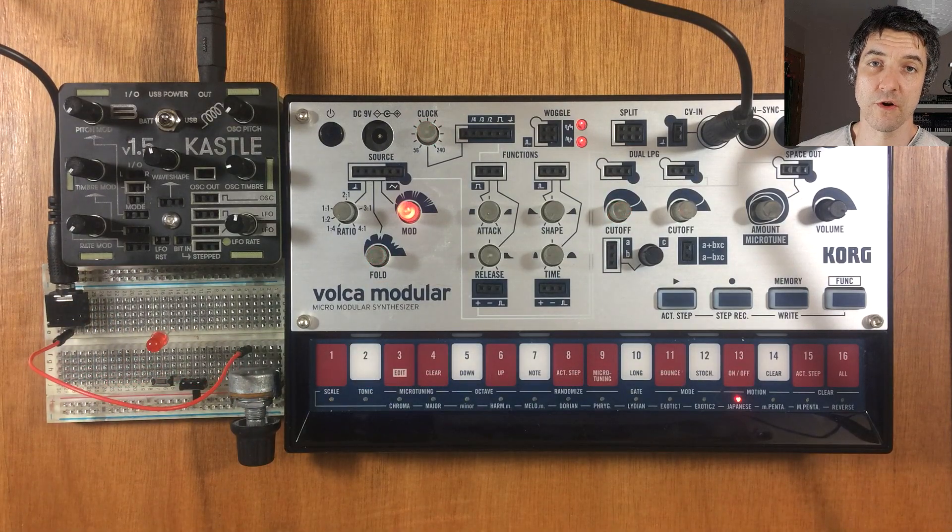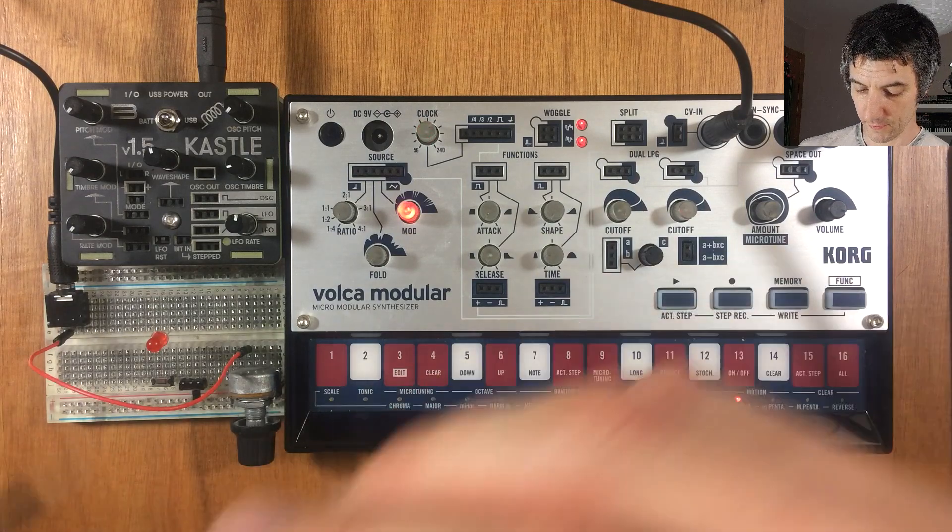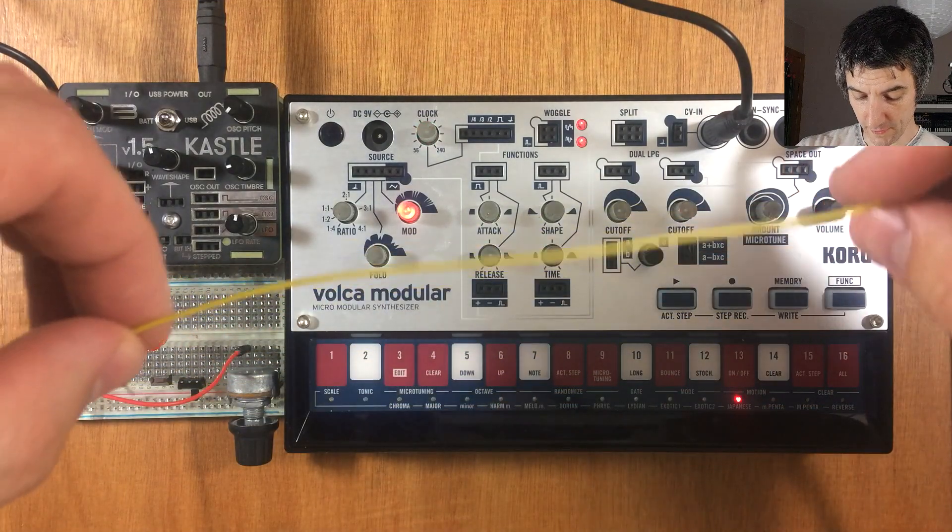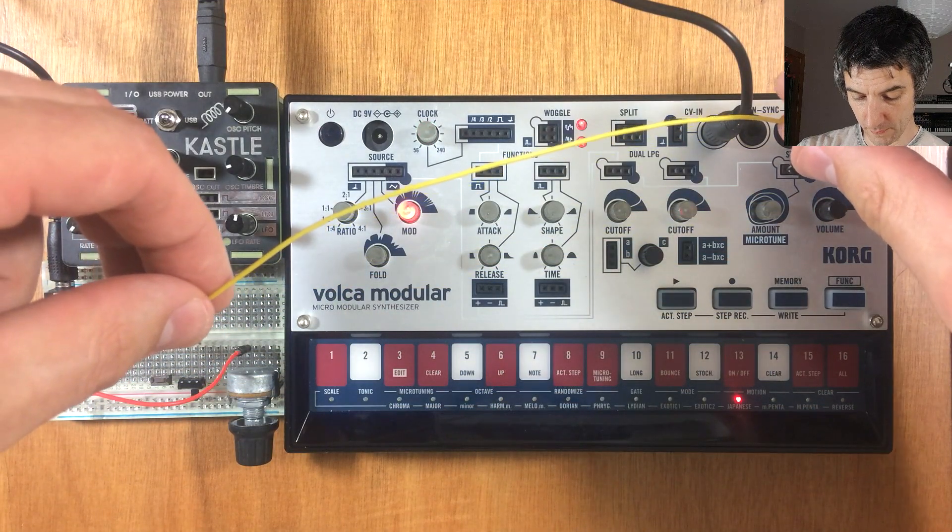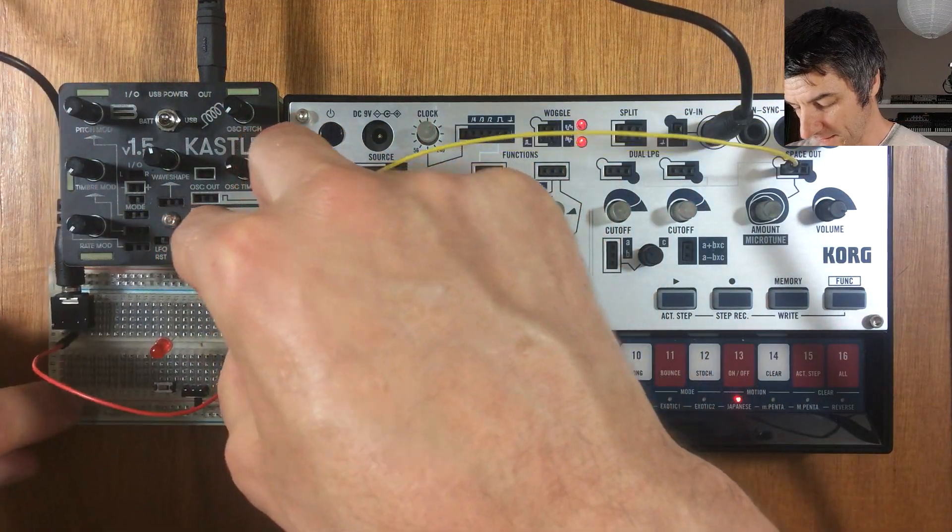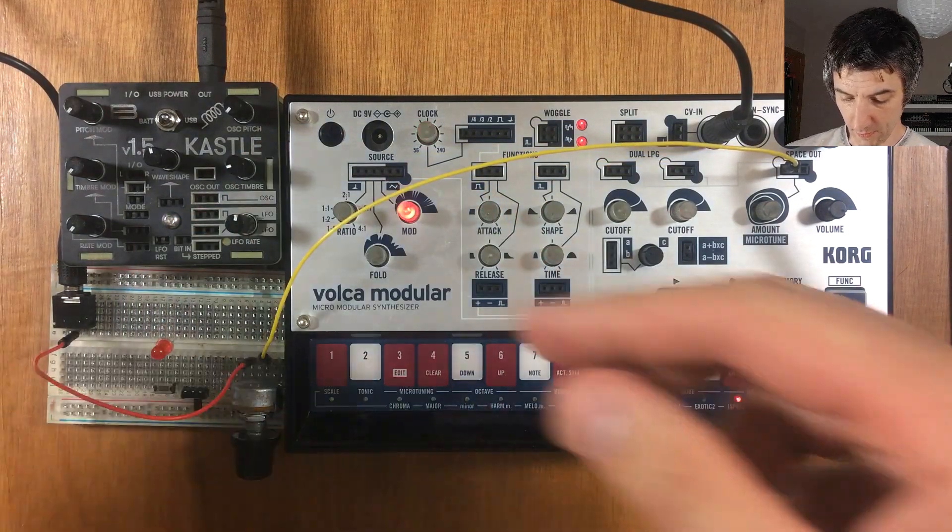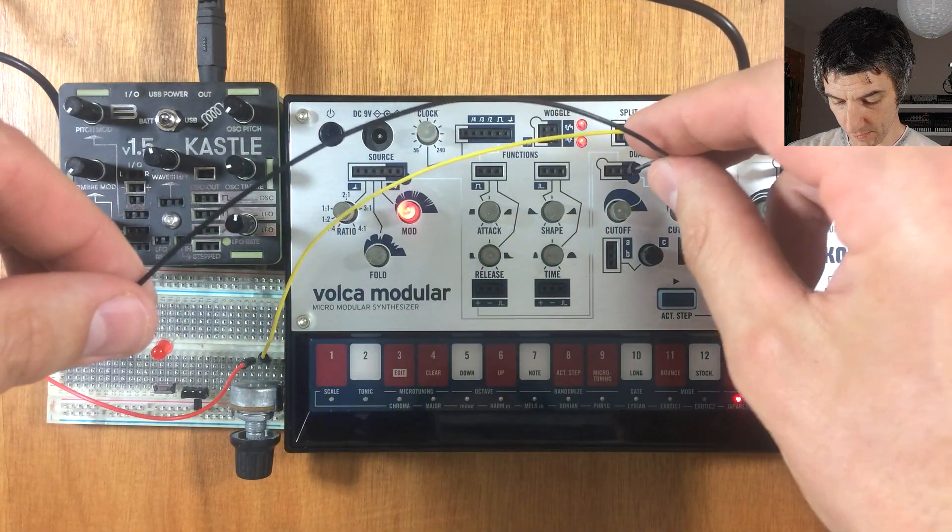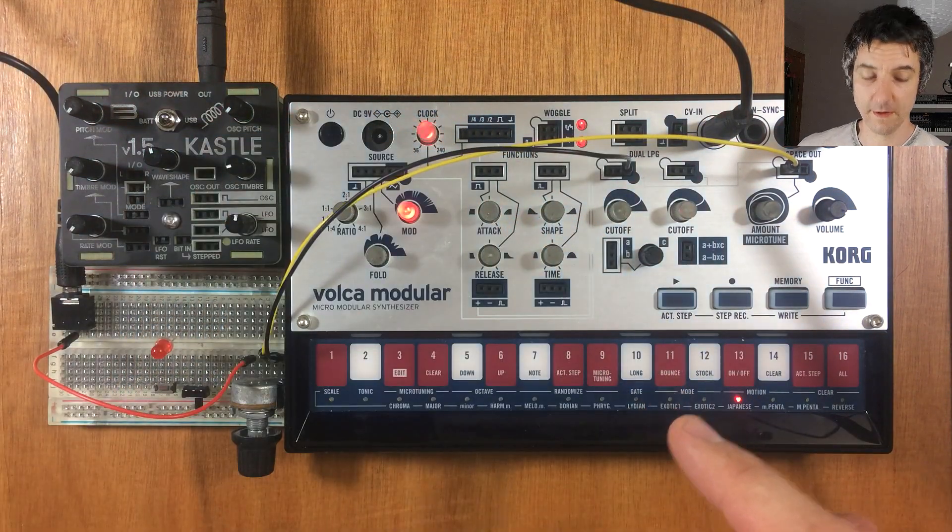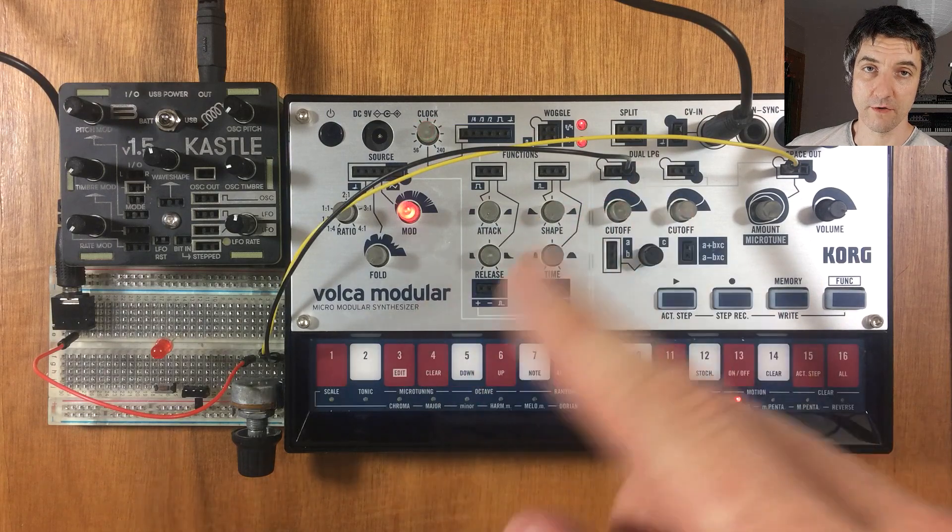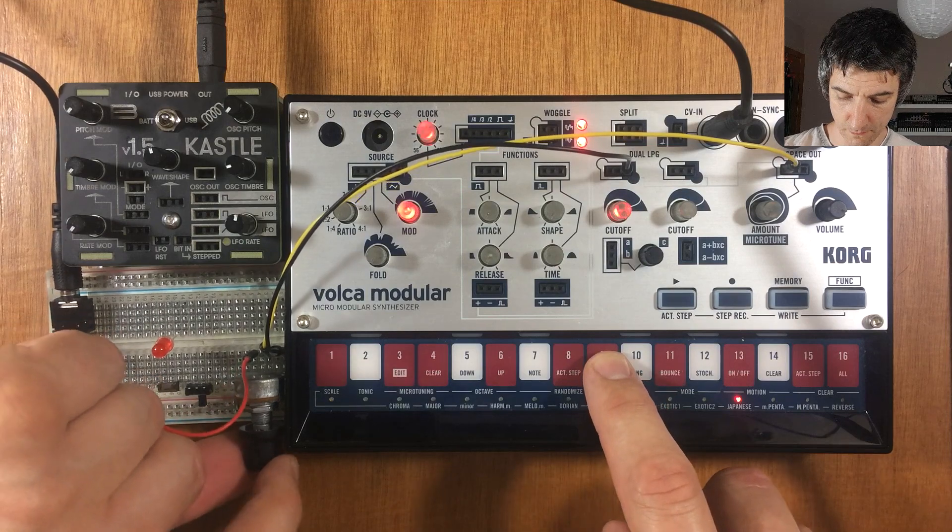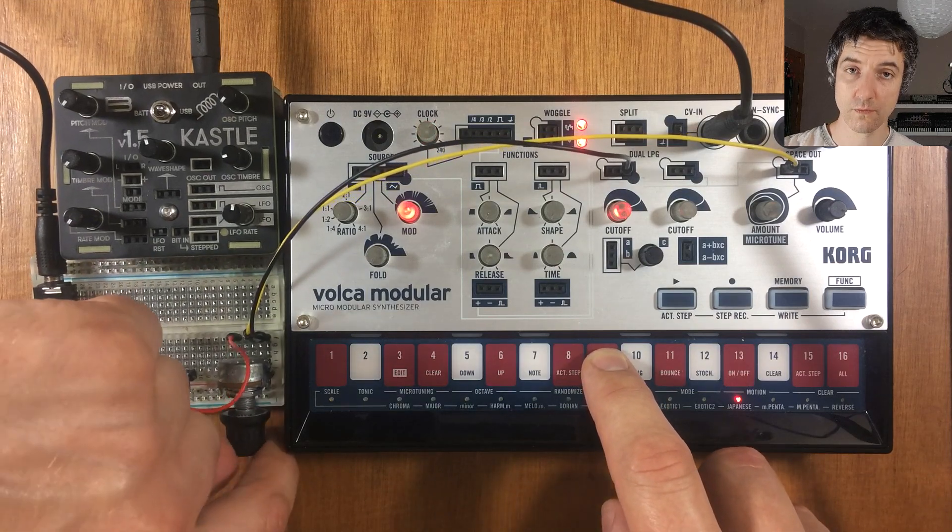So another use of the same setup is we can use it to control the volume of certain things. So we've still got ground connected here to our knob. We turn all the way down. If we take this input to the output section of the Volca Modular and connect that to the center pin, and then the output of one of our low pass gates here into the right hand connection, we can control the volume of this. Because if we do that with the cutoffs here, we completely change the tone and the length of time that notes will take to play.